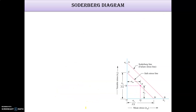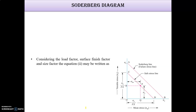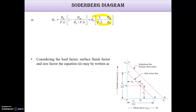Considering load factor, surface finish factor, and size factor, the Soderberg equation becomes: Sigma V = (endurance limit / factor of safety) × (1 − Sigma M / Sigma Y). The final form of this equation is: 1 / (factor of safety) = Sigma M / Sigma Y + Sigma V / Sigma E.